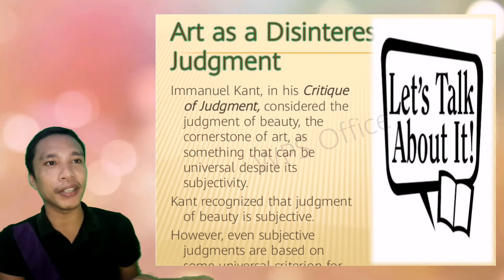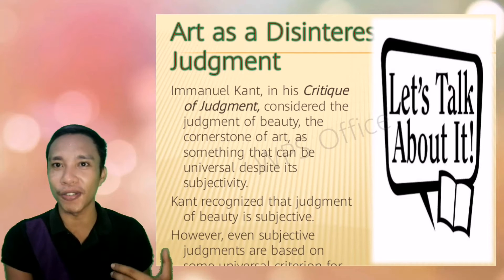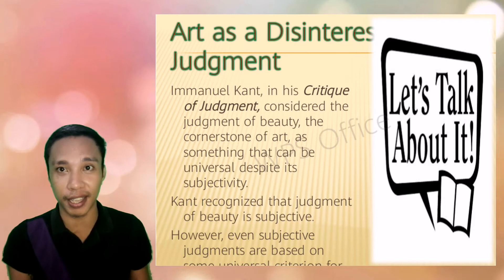Now we're done with art as an imitation and art as a representation. The last one is art as a disinterested judgment. The philosopher we have here is Immanuel Kant. In his Critique of Judgment, he considered the judgment of beauty — the cornerstone of art — as something that can be universal despite its subjectivity. We already know that art is sometimes subjective and can also be objective. The interpretation depends not just on the artist but also on the audience — the artist's interpretation might be different from what the audience perceives.